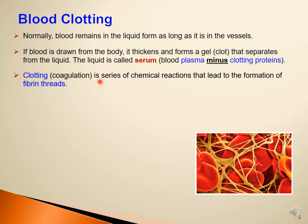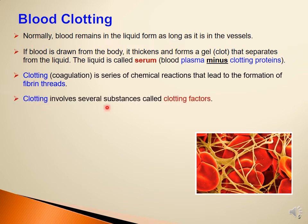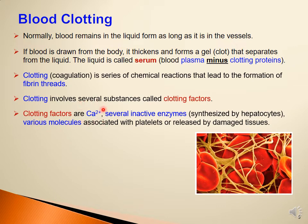Clotting or coagulation is a series of chemical reactions that lead to the formation of fibrin threads. Clotting involves several substances called clotting factors, which are mostly proteins — most produced by hepatocytes in the liver. Clotting factors include calcium; as noted, most are proteins but some are not, and calcium is one of the non-protein clotting factors. In addition to calcium, there are several inactive enzymes produced mainly by the liver, and some clotting factors produced outside the liver.